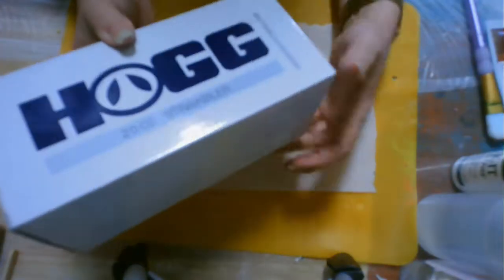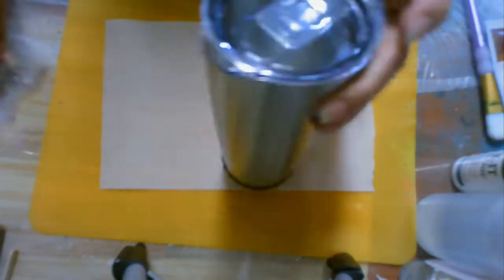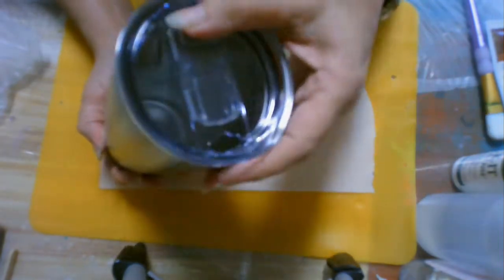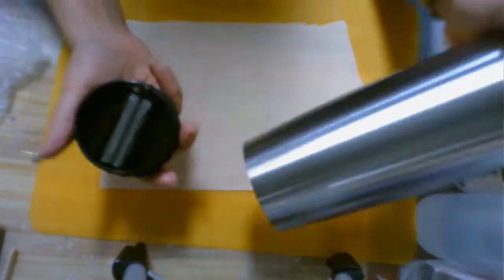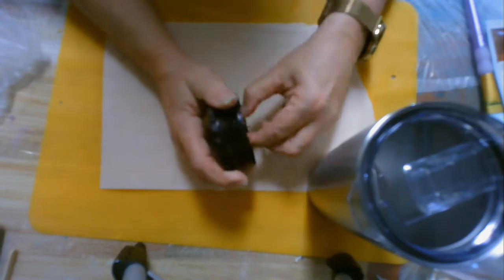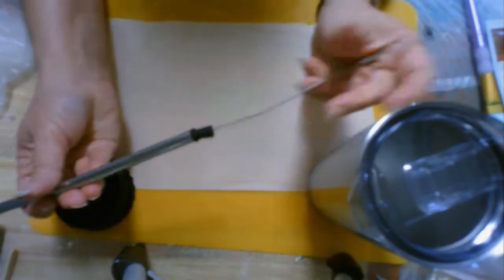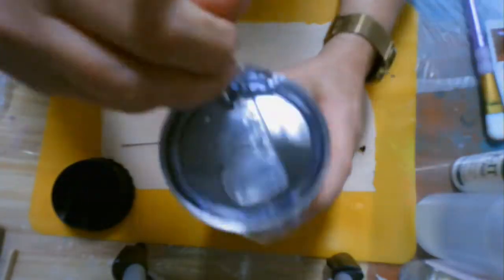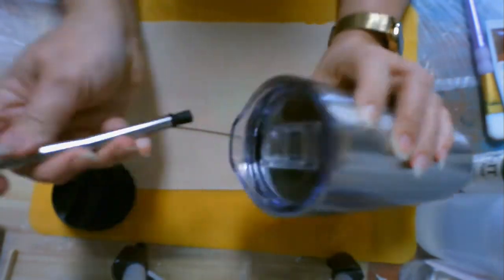Today I am working on a new type tumbler from Hogg. This is a 20-ounce straw blur. It has the sliding top and then it has this really unique screw on bottom that is also a storage area for a collapsible stainless steel straw. And the opening is made special just to fit the straw down in there.